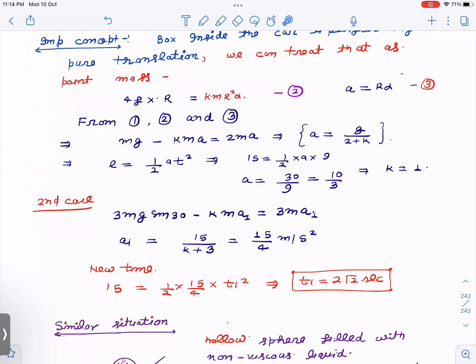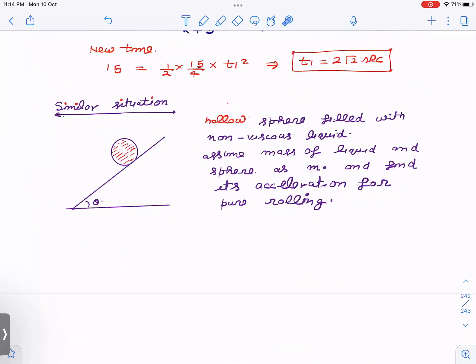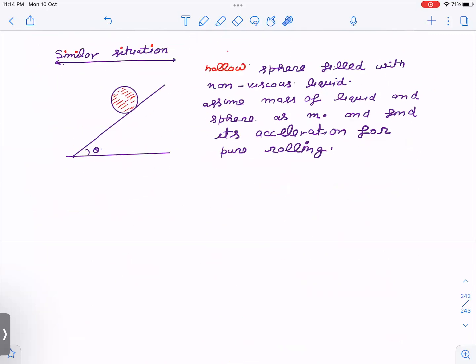This is a similar question you can try. The question is: there is a hollow sphere filled with non-viscous liquid. So if this is a hollow sphere of mass m and this is a non-viscous liquid, that means friction force cannot act between the liquid and the sphere. Suppose the mass of the liquid and sphere is m - both have m mass - then find its acceleration for pure rolling.